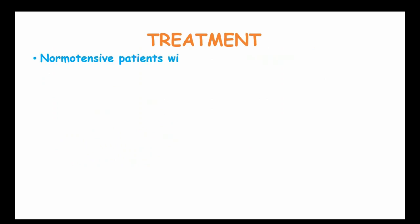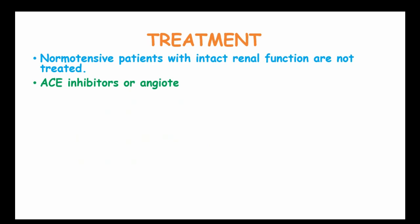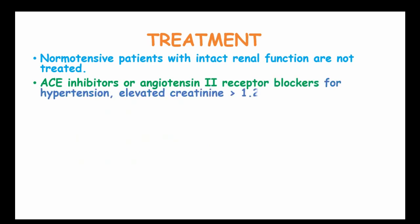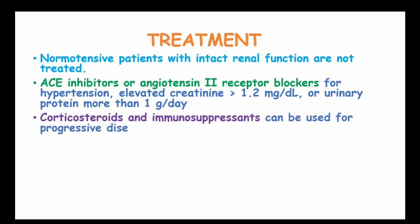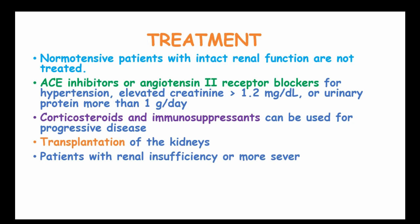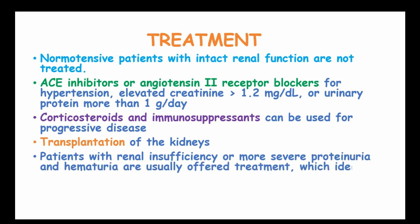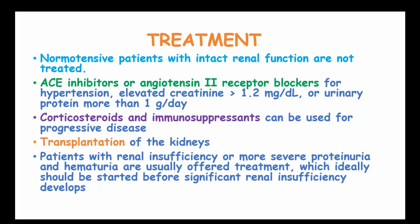Normotensive patients with intact renal function are not treated, but angiotensin converting enzyme inhibitors or angiotensin-2 receptor blockers can be used for hypertension, elevated creatinine of more than 1.2 mg per deciliter, or urinary protein more than 1 gram per day. Corticosteroids and immunosuppressants can be used for progressive disease, and kidney transplantation can be considered. Patients with renal insufficiency who have more severe proteinuria and hematuria are issued over-treatment, which ideally should be started before significant renal insufficiency develops.